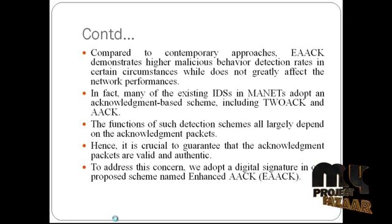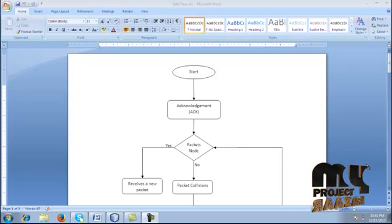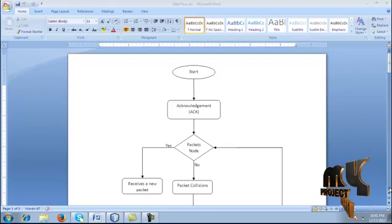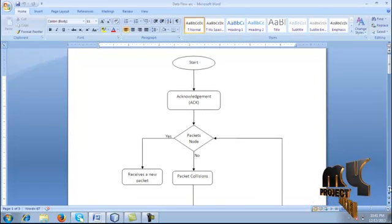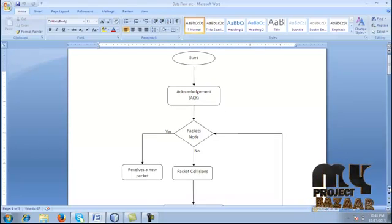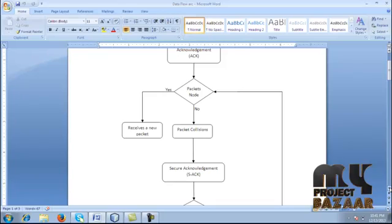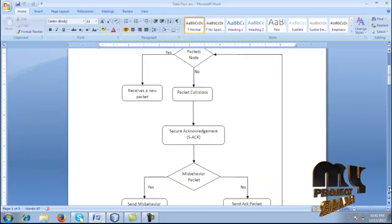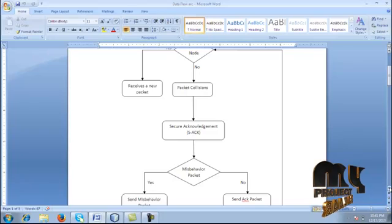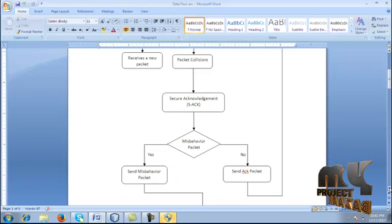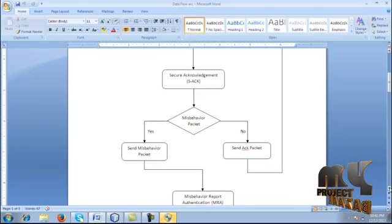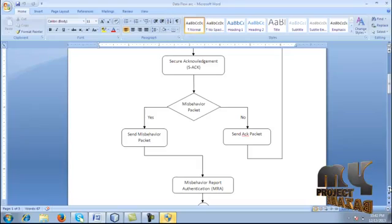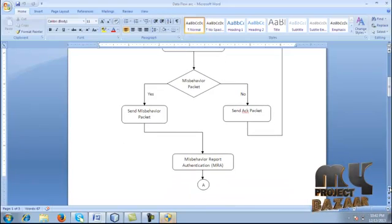By means of digital signature, we can securely transfer the data and securely detect misfigured nodes. Next, we are going to see the process flow. First, in the MANET environment, we have to transfer the packet. For every packet transfer, we get the acknowledgement and the nodes are determined by the packet ID. In order to avoid collisions and ensure further security, we introduce a secure acknowledgement in which the misfigured node is detected by means of introducing the digital signature process, which results in misfigured report detections.